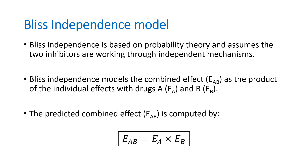Bliss independence is based on probability theory and assumes the two inhibitors are working through independent mechanisms. The inhibitors do not interfere with each other but contribute to a common result. Unlike Loewe additivity, calculating Bliss independence does not require determination of dose-response curves for the individual compounds to determine the theoretical results, making it easier to compute. Bliss independence calculates the combined effect as the product of the individual effects with drugs A and B. The predicted combined effect is computed by the formula here, where each effect is expressed as fractional activity compared to control between zero and one.